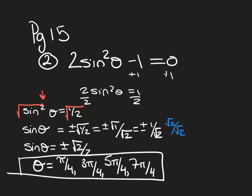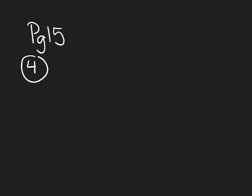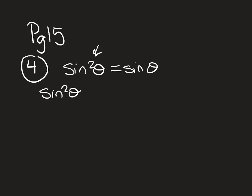For page 15, number 4: never divide by a trig function or cancel it out — doing so cancels answers. Because there's a squared term it's a quadratic, so factor it. Set it equal to zero so you can factor, and note that both terms share a sine θ in common.